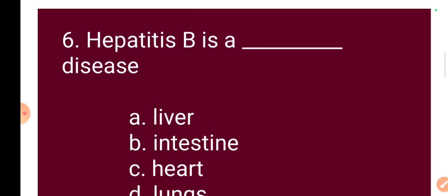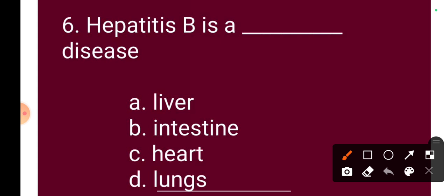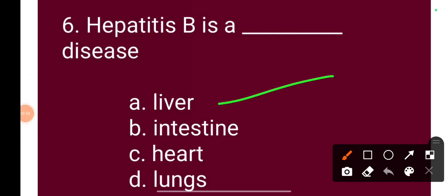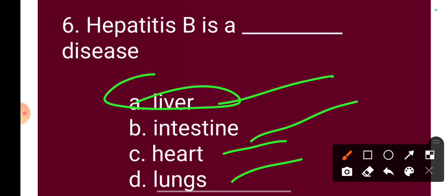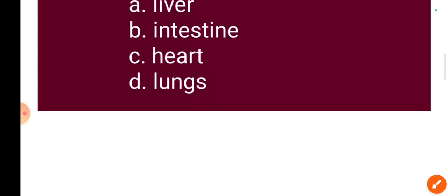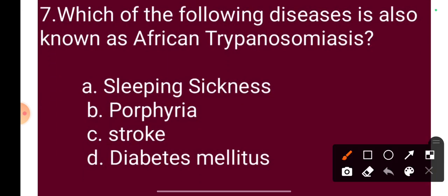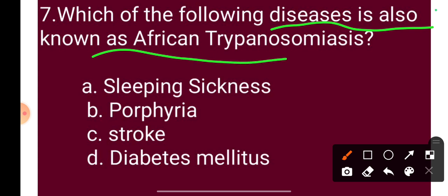Question 6: Hepatitis B is a disease of — Option A: liver, Option B: intestine, Option C: heart, Option D: lungs. The correct answer is Option A: liver. Hepatitis B is a liver disease.